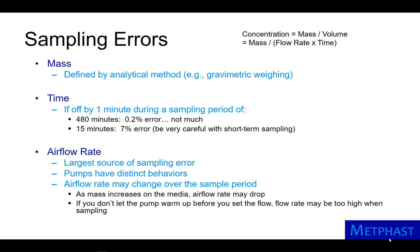If the sample time is off by one minute over an 8-hour work shift, or 480 minutes, the error is only 0.2%. However, it is 7% over a 15-minute sampling period, so one must be careful with short-term sampling.